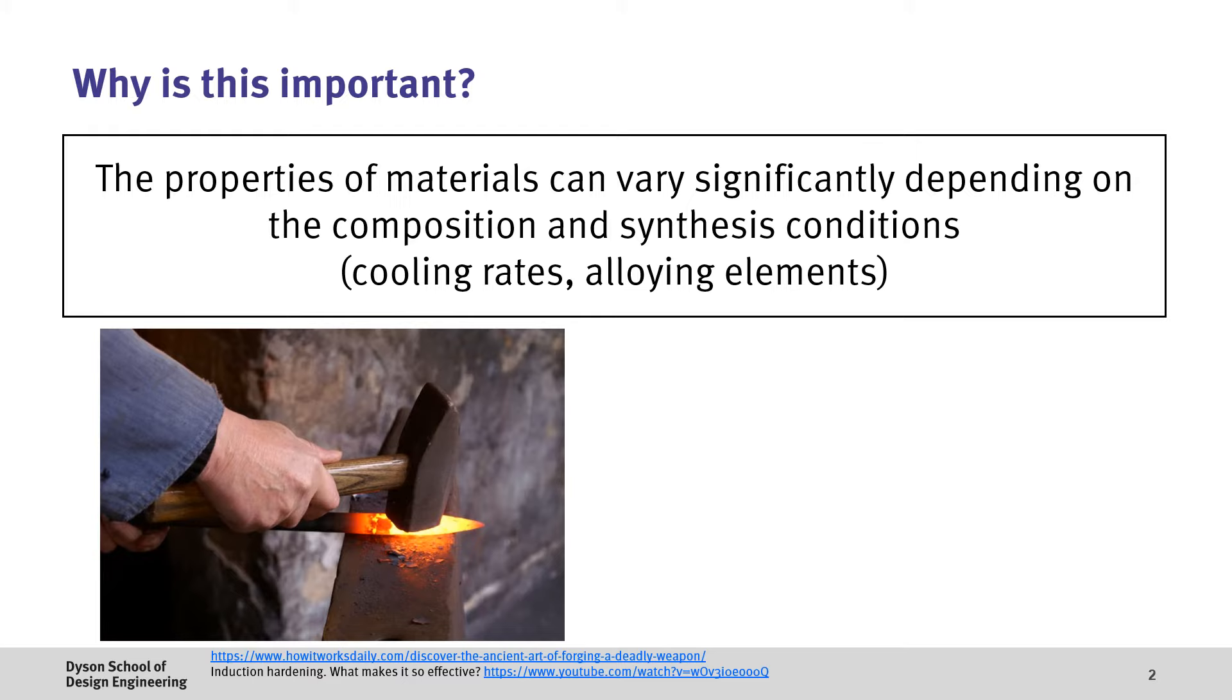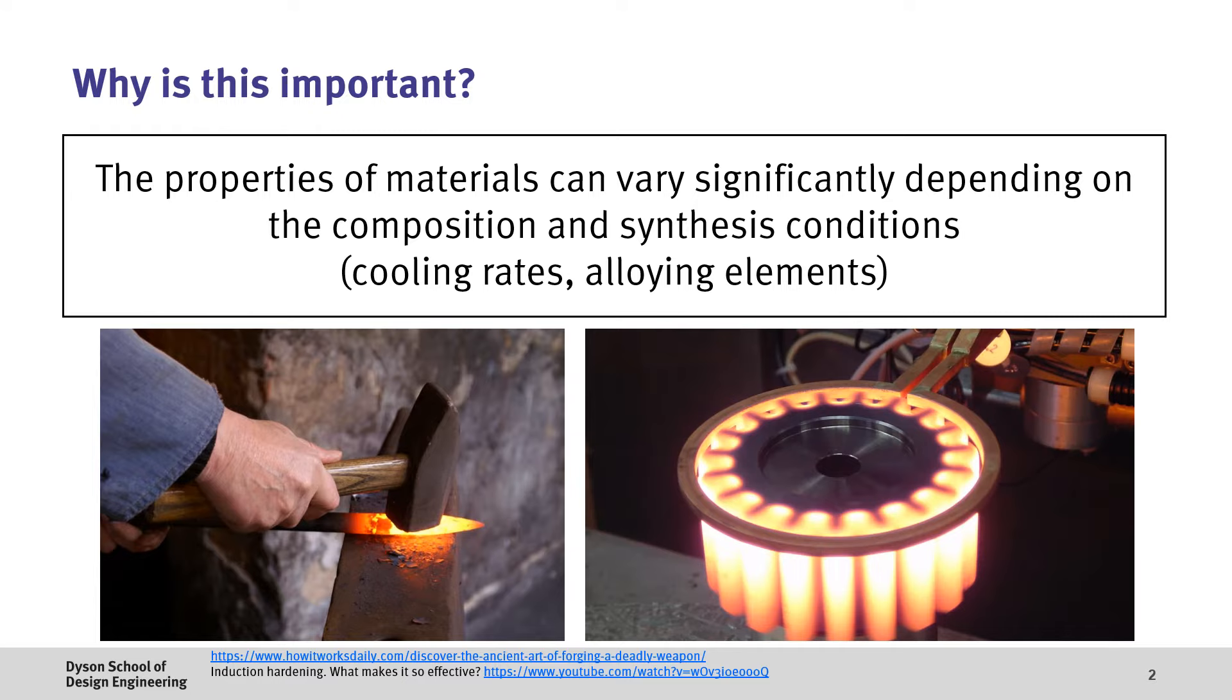One example is in sword making where we might want to increase the strength of the metal by quenching this in water after we've heated and formed the sword. In another example we might have a gear where we want the teeth to have extremely high hardness and wear resistance but have a ductile core. Here we might use approaches such as induction heating to selectively heat a region and then rapidly cool this to have a hard outer shell but also ductile center. In both of these cases though we're looking at non-equilibrium processes and having a detailed understanding of what's actually going on will help us to better select appropriate materials and their manufacturing processes.